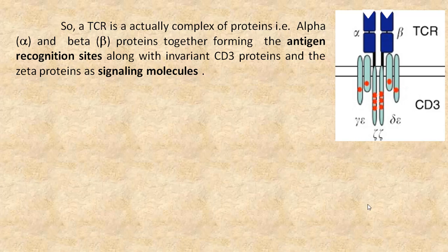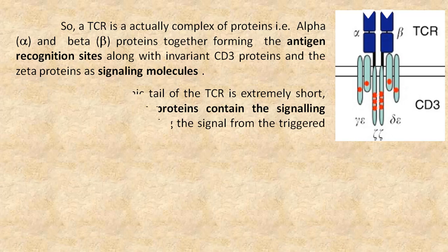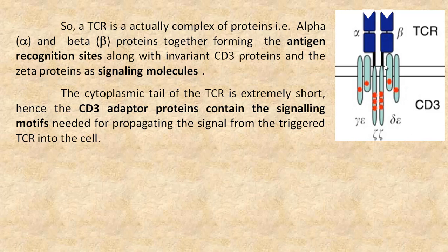A TCR is actually a complex of proteins: alpha and beta proteins together forming the antigen recognition sites, along with invariant CD3 proteins and the zeta proteins as signaling molecules. The cytoplasmic tail of the T cell receptor is extremely short. Hence, the CD3 adapter proteins contain the signaling motifs needed for propagating the signal from the triggered TCR into the cell.